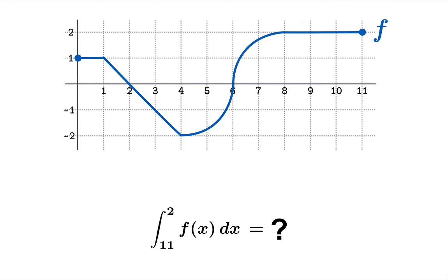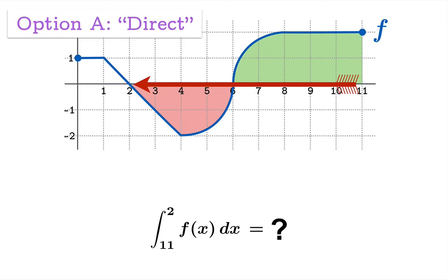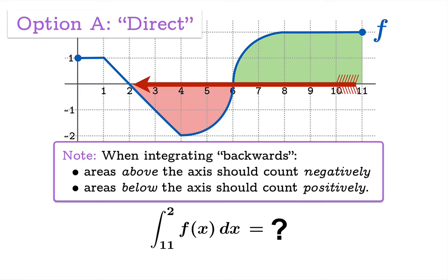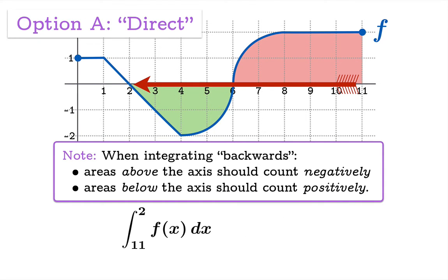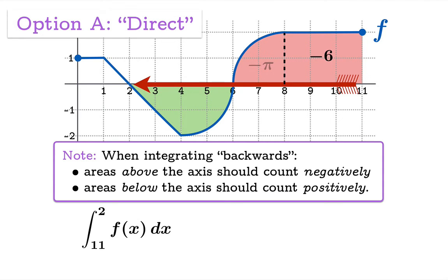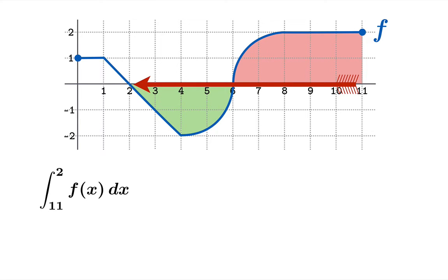Now let's find the integral of f from 11 to 2. Notice we're going backwards. We're going to look at this three different ways. Option A is the direct option: how do you interpret backwards integration? When integrating backwards, you interpret things exactly the opposite way — areas above the horizontal axis count negatively and areas below count positively. So the integral from 11 to 2 would be given by negative 6 minus pi plus pi plus 2, which equals negative 4. But that's a lot of baggage — I don't like constantly thinking through how to do the opposite through a chain of calculations.